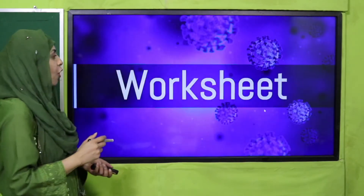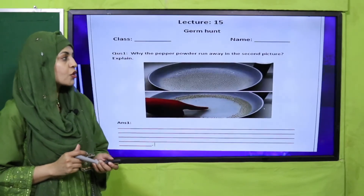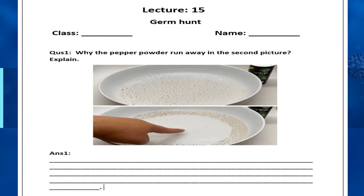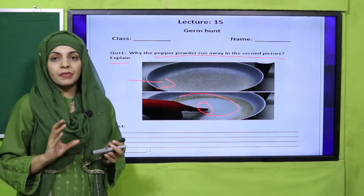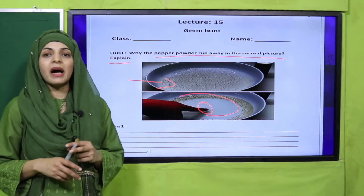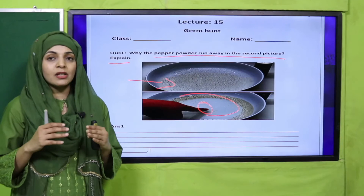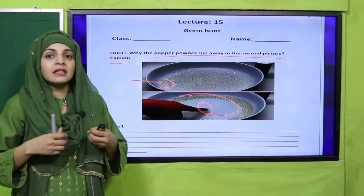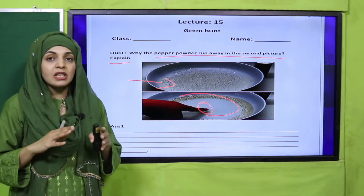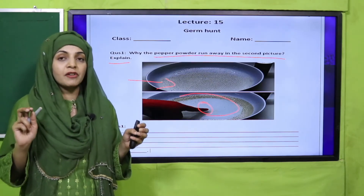We will move forward to the worksheet. You can download it from the description box below this video or get it in print form from your teacher. Why did the pepper powder or glitter run away in the second picture? When you touch it, it leaves a hollow space — because soap touching the water maintains the water's surface balance and moves it, taking the germs along with it.